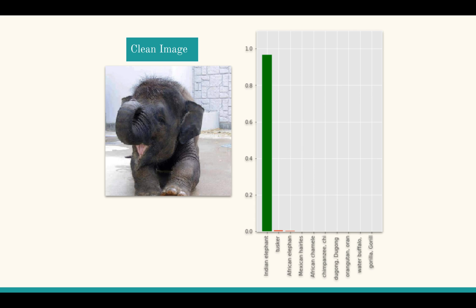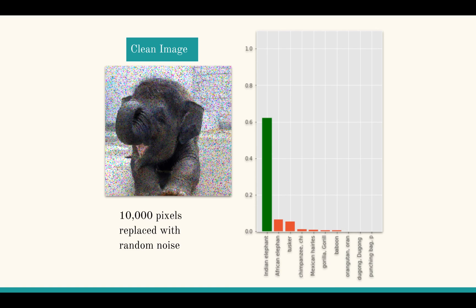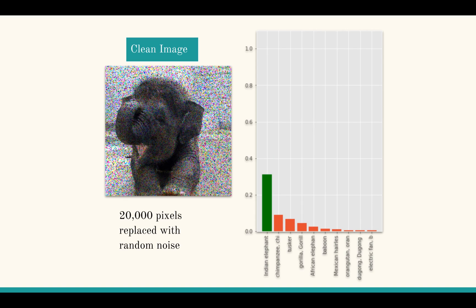Let me show you an example. Here we can see that this image is currently classified as Indian Elephant with very high confidence. Now let us randomly replace 10 pixels of this 90,000 pixel image by random values — the classification hardly changes. Even as we increase to 50, 100, 1000, 5000, 10,000, and 20,000 pixels, the image is still correctly classified, although the confidence is much lower than the original.